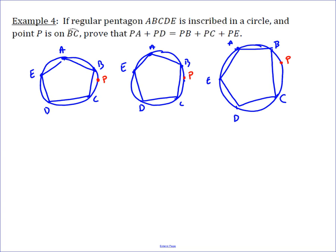In this problem, we're given a regular pentagon, ABCDE, and a single point P that is on the circle between B and C. If we draw lines from P to the five vertices, this relationship holds: the sum of the distances PA plus PD equals the sum of the distances from P to the other three points, PB plus PC plus PE.